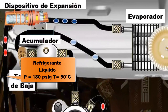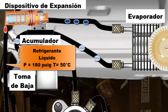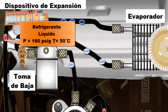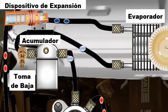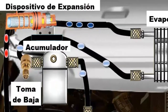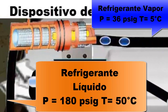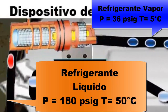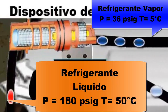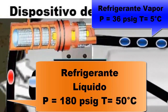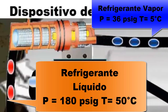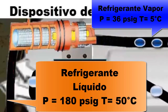The liquid refrigerant moves to the expansion device to return to the original low pressure. At this point, the refrigerant enters at a temperature of, for example, 50 degrees Celsius and exits at 5 degrees Celsius.